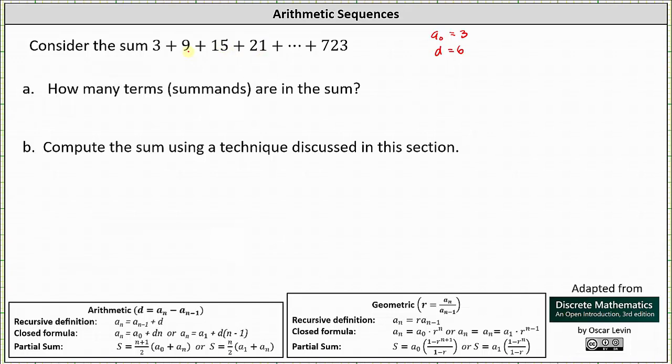And before we can determine how many terms are in the sum, we need to determine the closed formula for the sequence we are summing. And because the first term is a sub zero, the closed formula is a_n = a_0 + d·n, which means in our case, a_n = 3 + 6n.